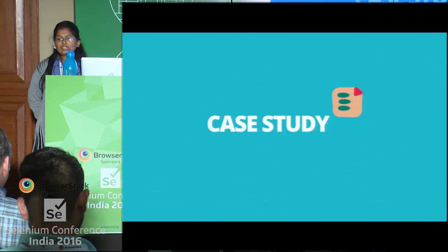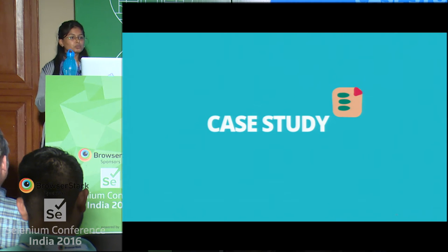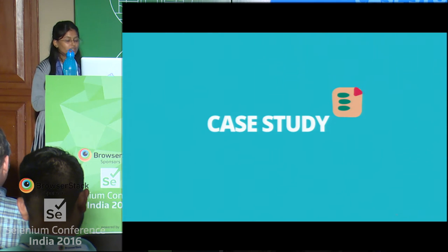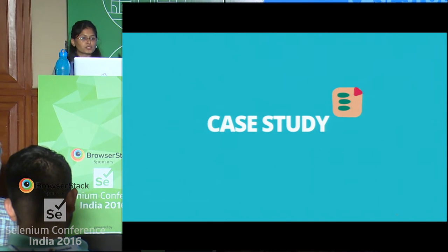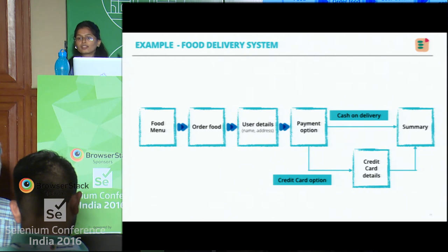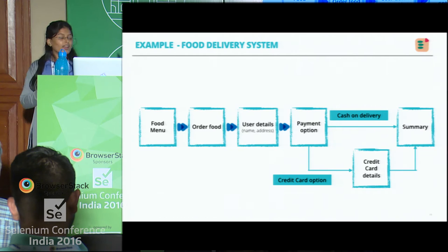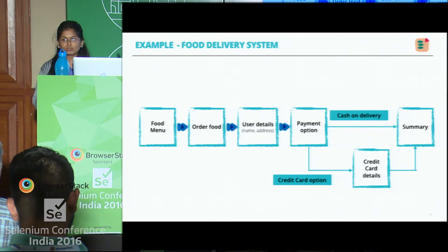We'll take one example for the remaining time — I'm going to present a problem statement and we will solve it together. The example is a food app — a general food app where food items are present, you can place an order, enter details like username and address, choose a payment option: cash on delivery or credit card. If you opt for credit card you enter those details and then a summary is shown. Simple example — we'll be referring to this for the remaining time.